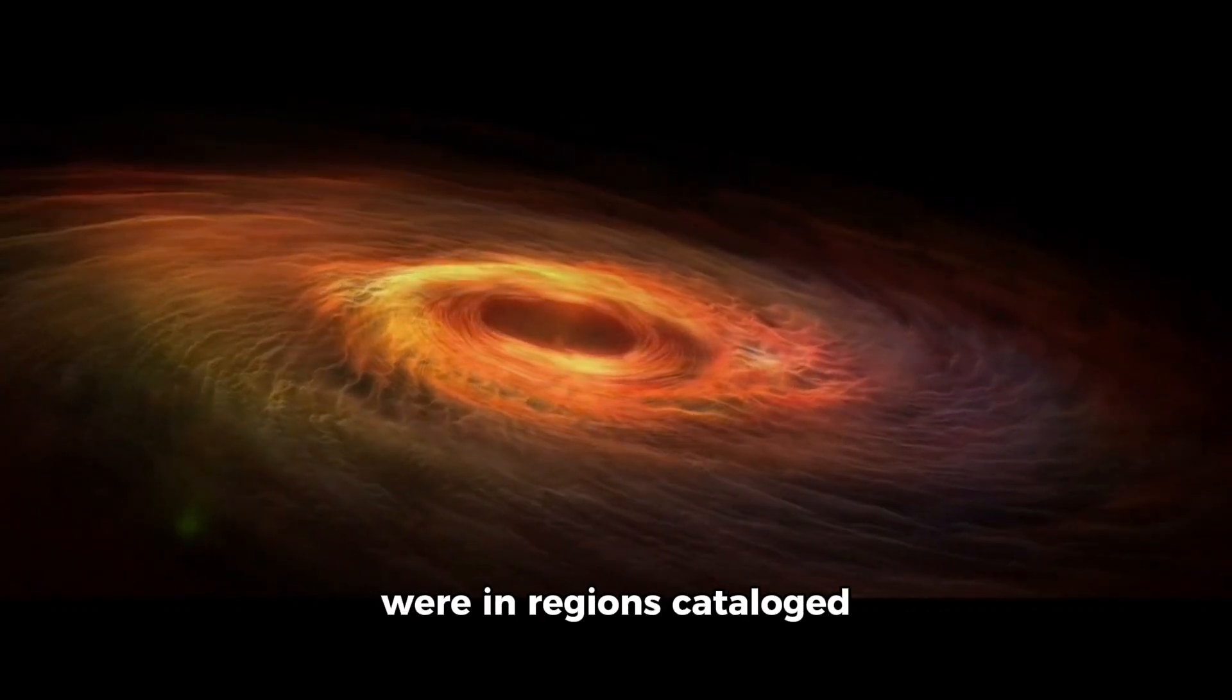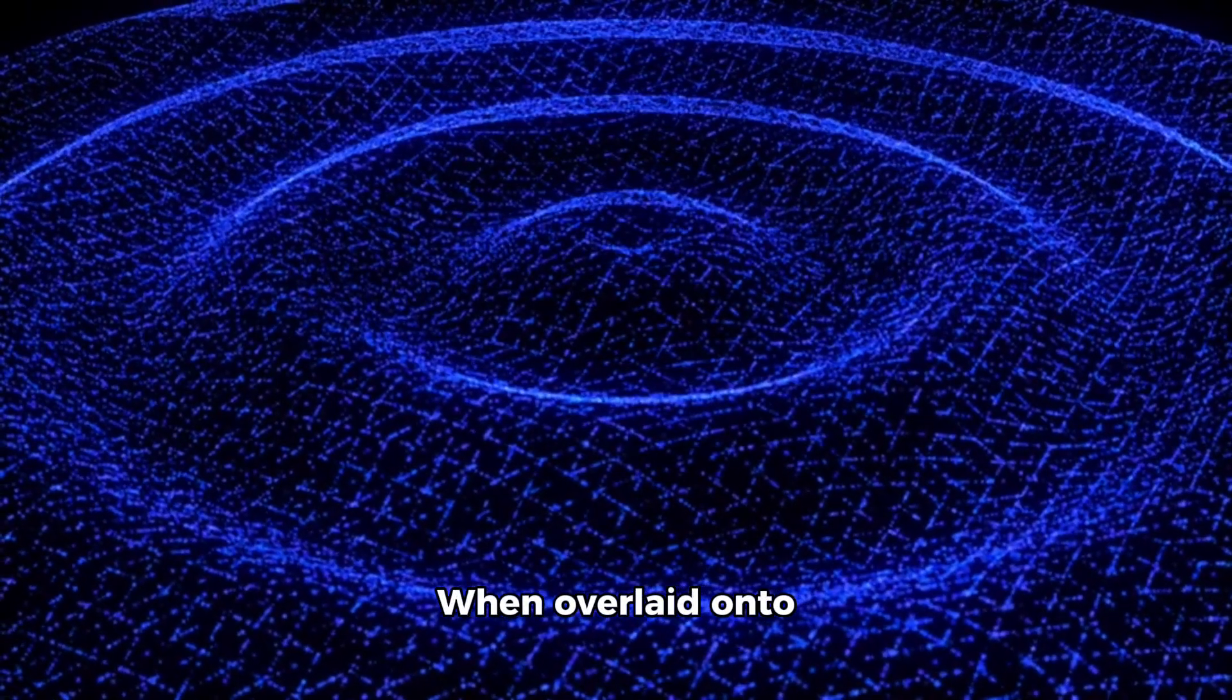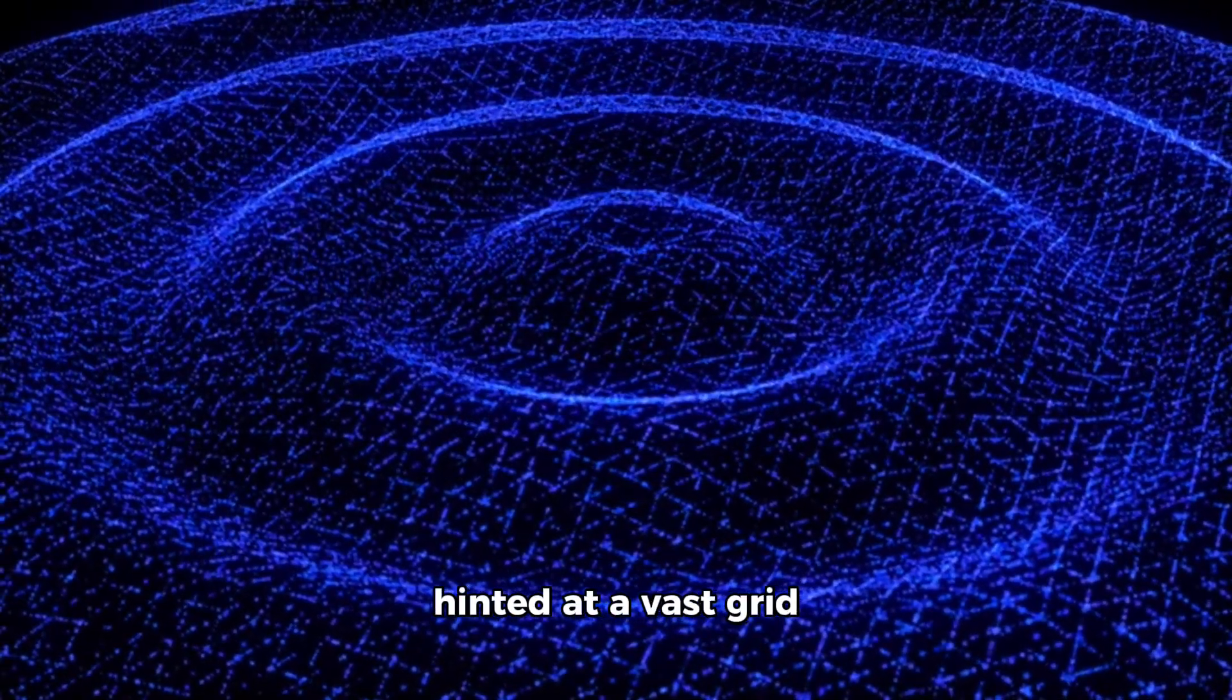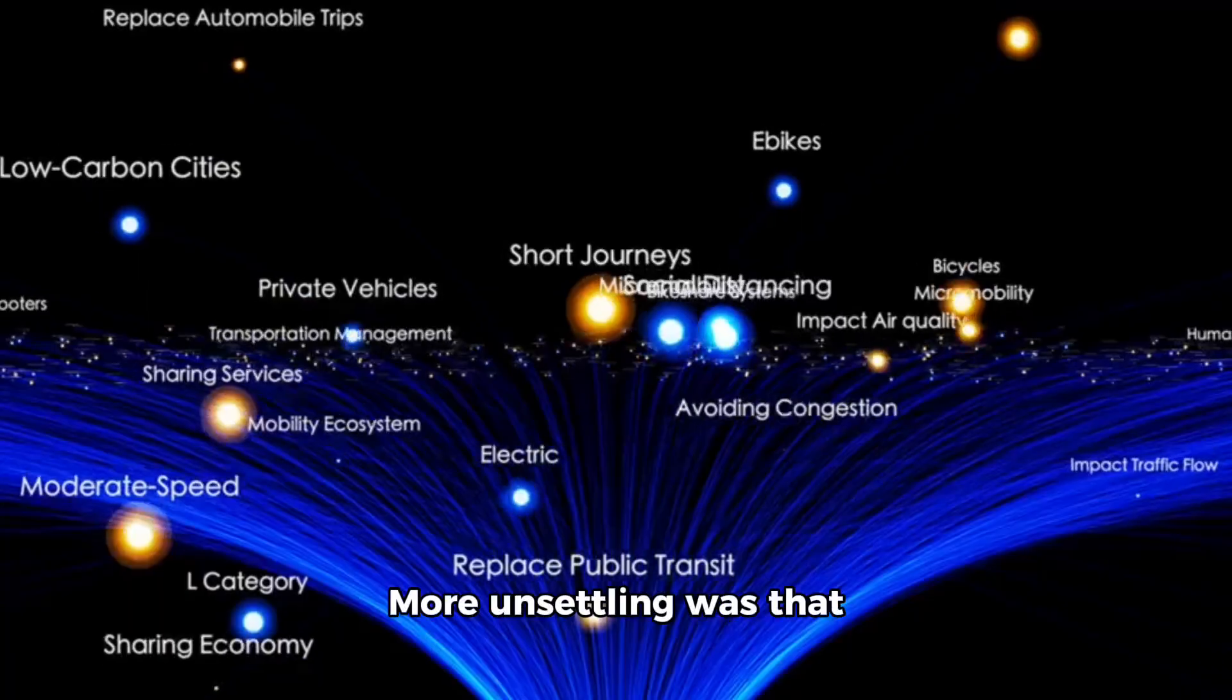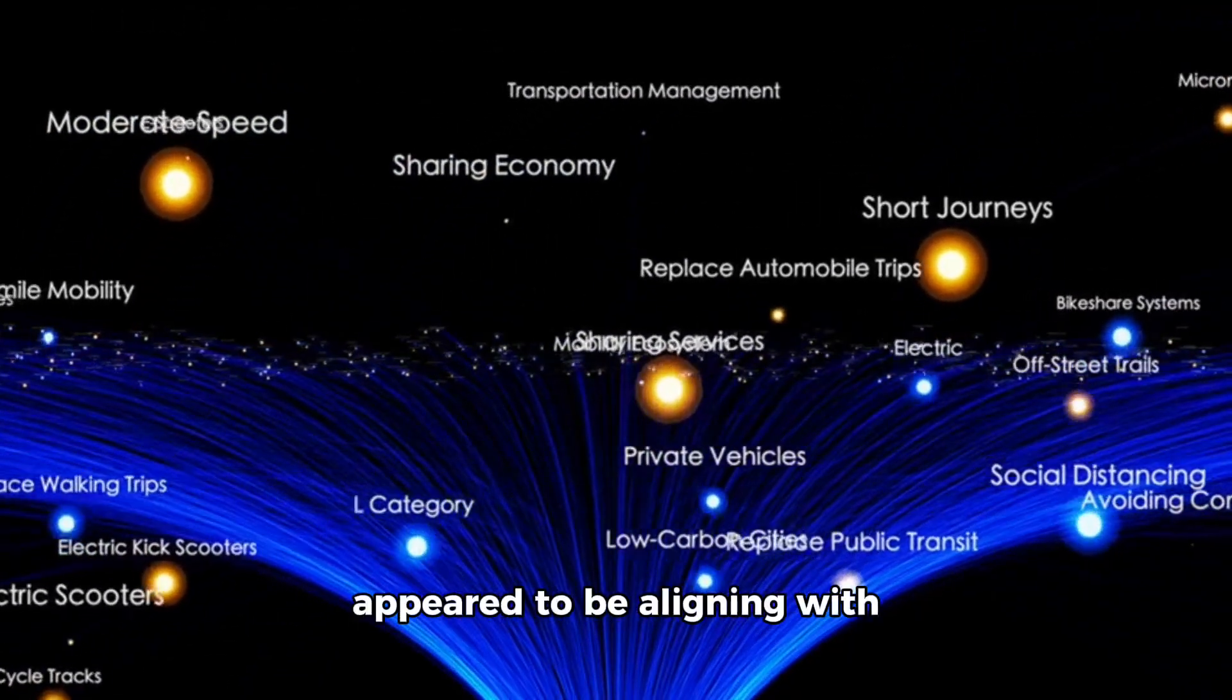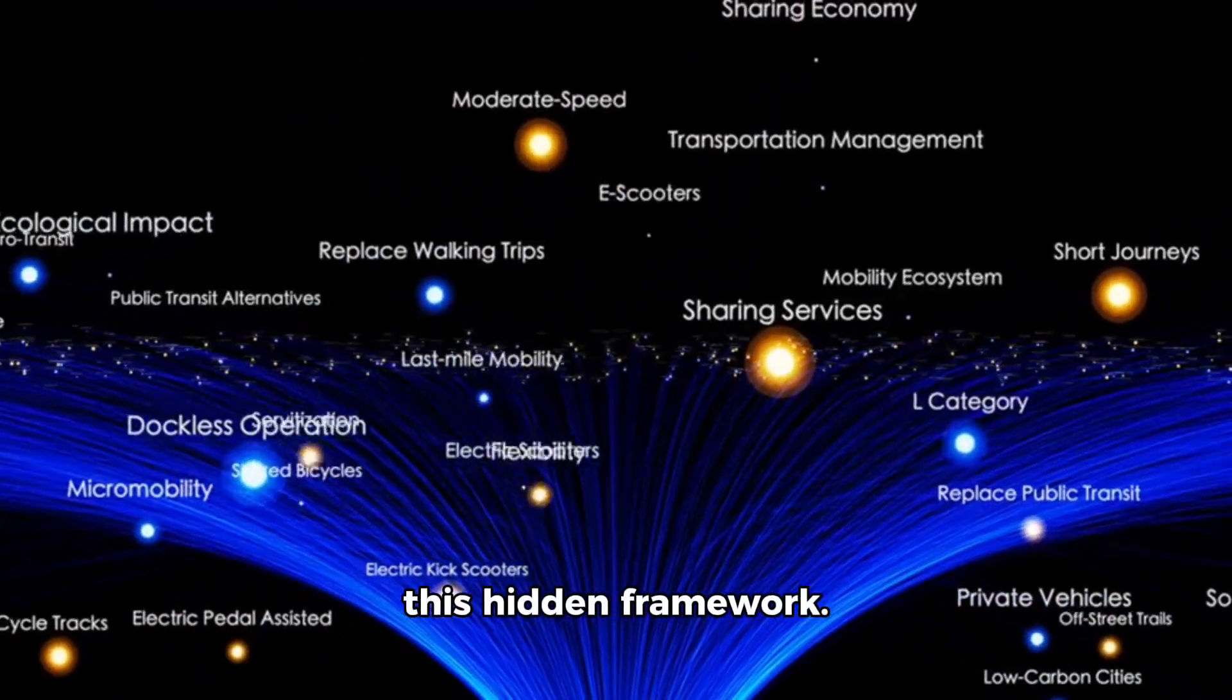These points weren't stars or planets. In fact, many of them were in regions catalogued as completely empty. When overlaid onto interstellar coordinate systems, the pattern hinted at a vast grid stretching beyond the reach of our telescopes, almost like an invisible architecture underlying the galaxy. More unsettling was that Voyager's altered trajectory appeared to be aligning with one of these points, as though it had become part of this hidden framework.